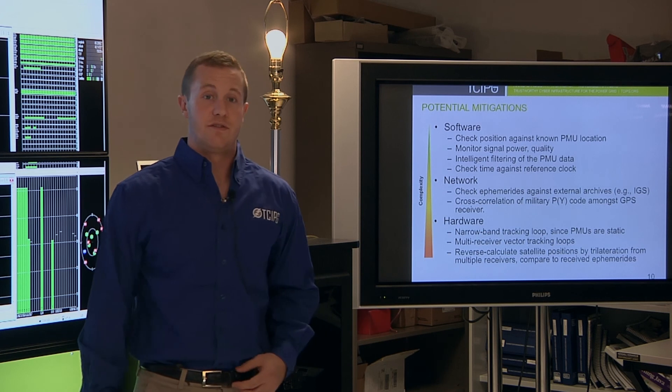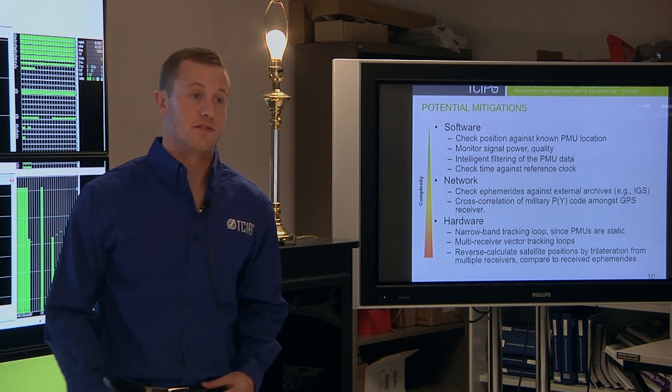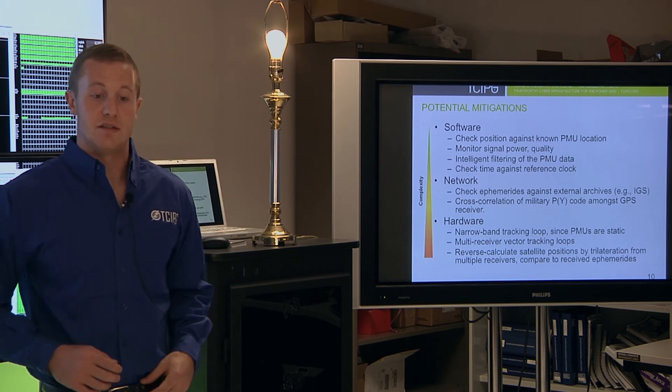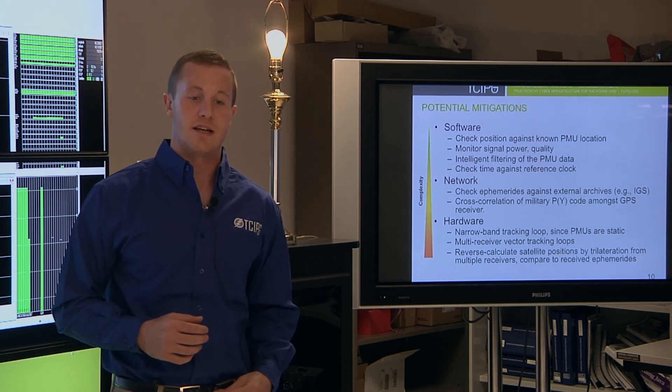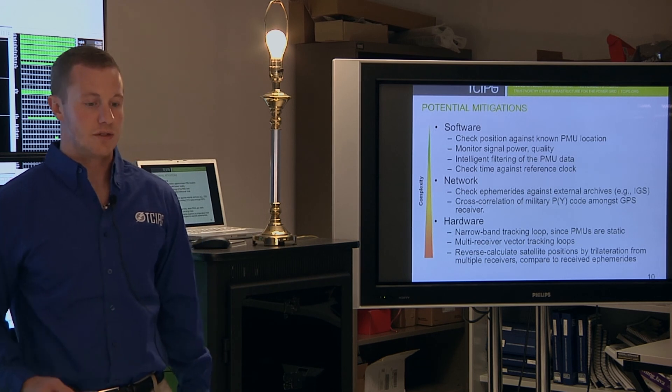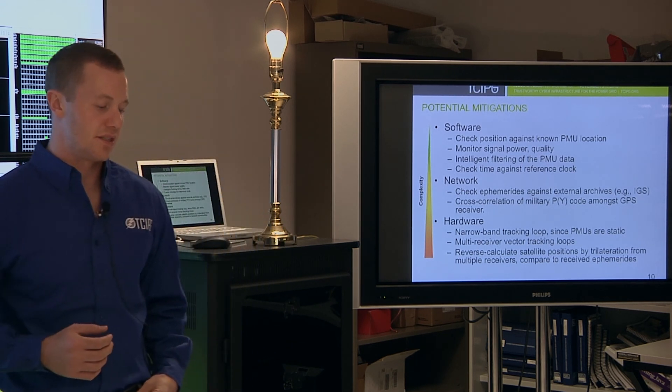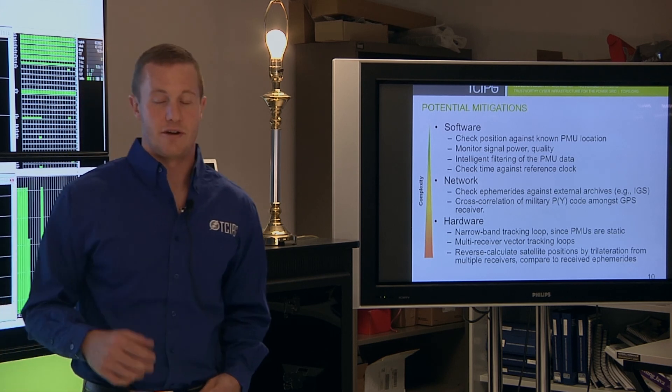The third type of detection and mitigation technique involves actually implementing new hardware. This involves things like having multiple antennas for a single receiver so that you can calculate the angle of arrival for the signal so that you can ensure that it's actually coming from a satellite and not from a ground-based signal generator.